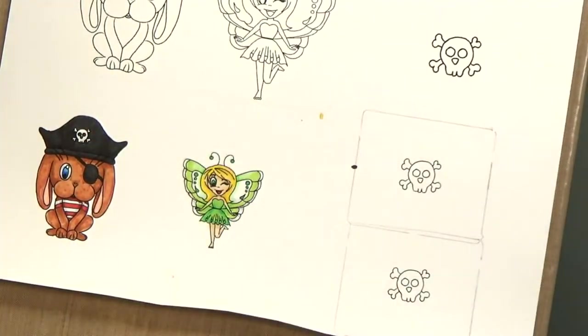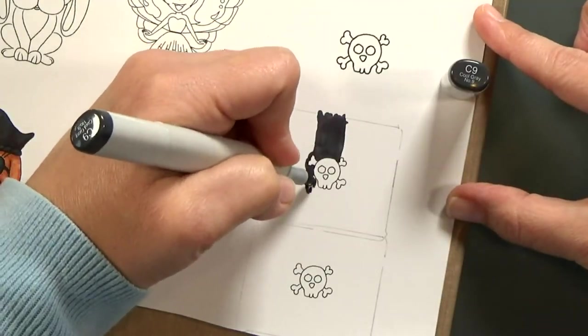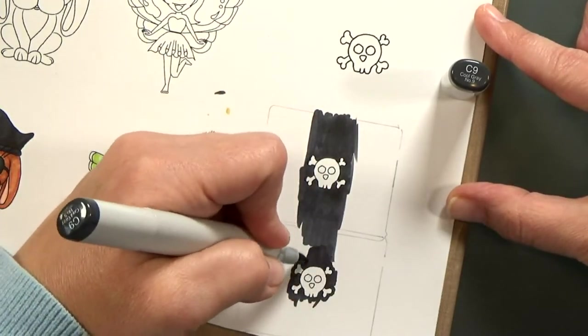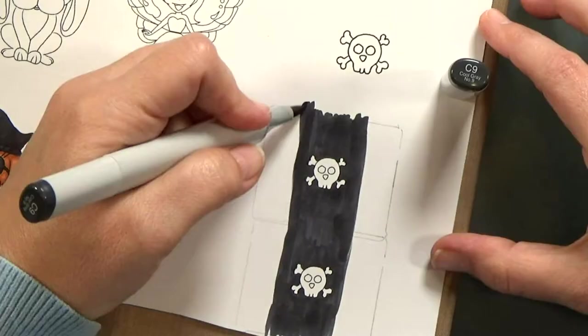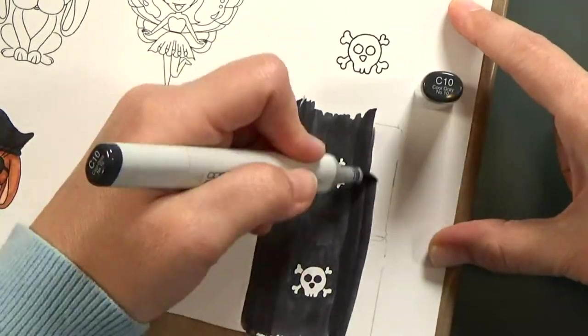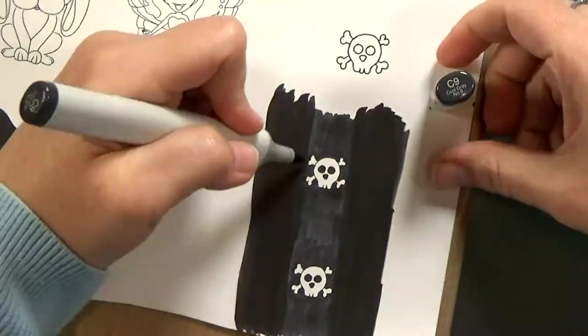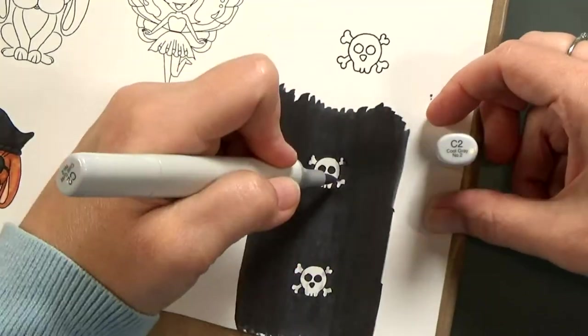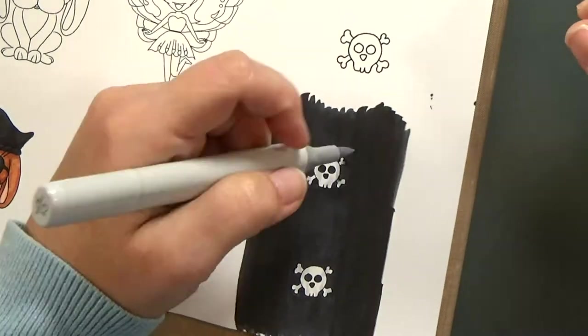For my pirate flags, I'm actually going to end up with one pirate flag but I'm coloring two so that I can put them back to back. I'm starting with a C9 and then I'll bring in a little bit of C10 and then black on the outer edges and I give it two coats. That gives me nice coverage.